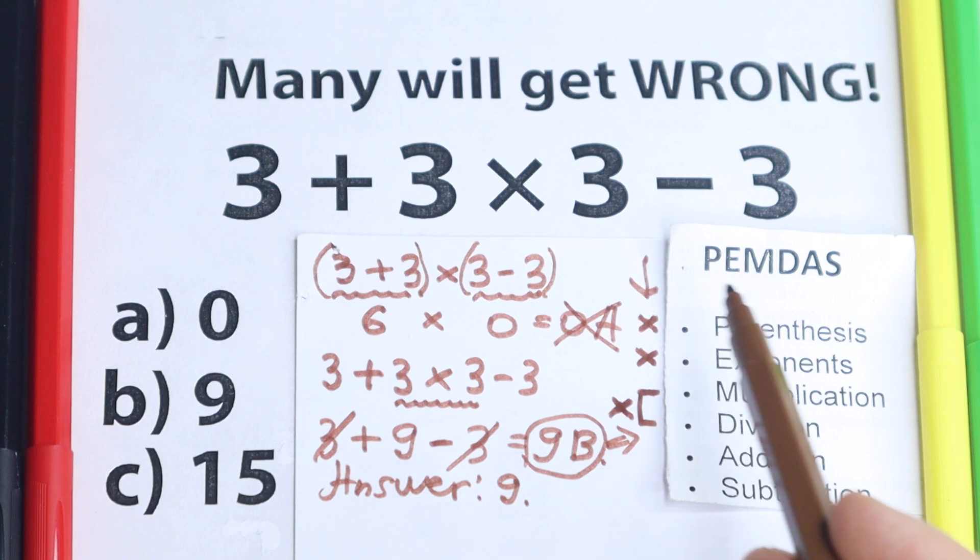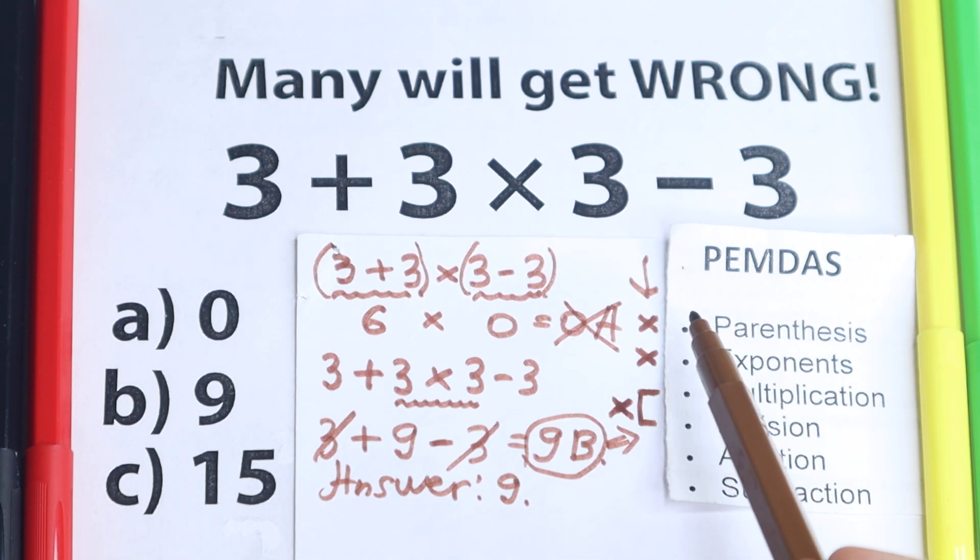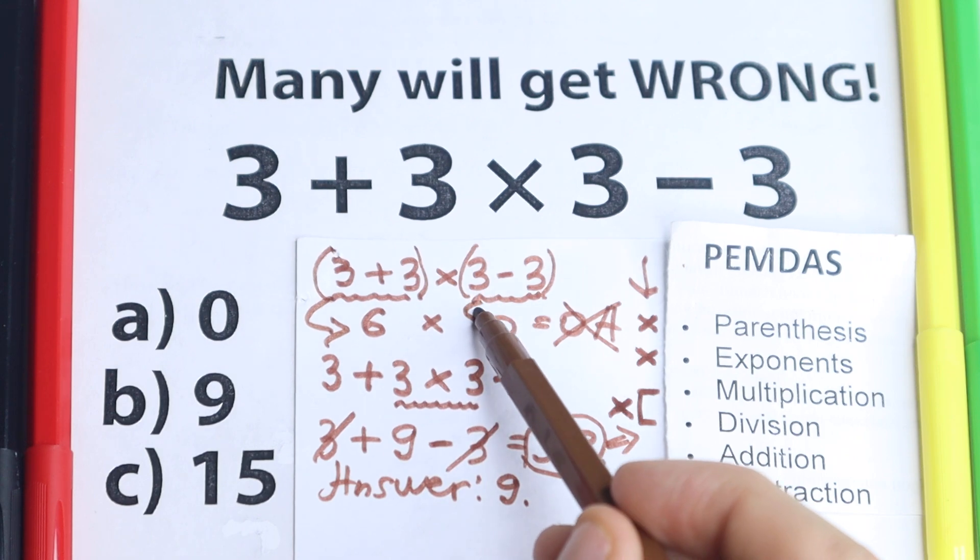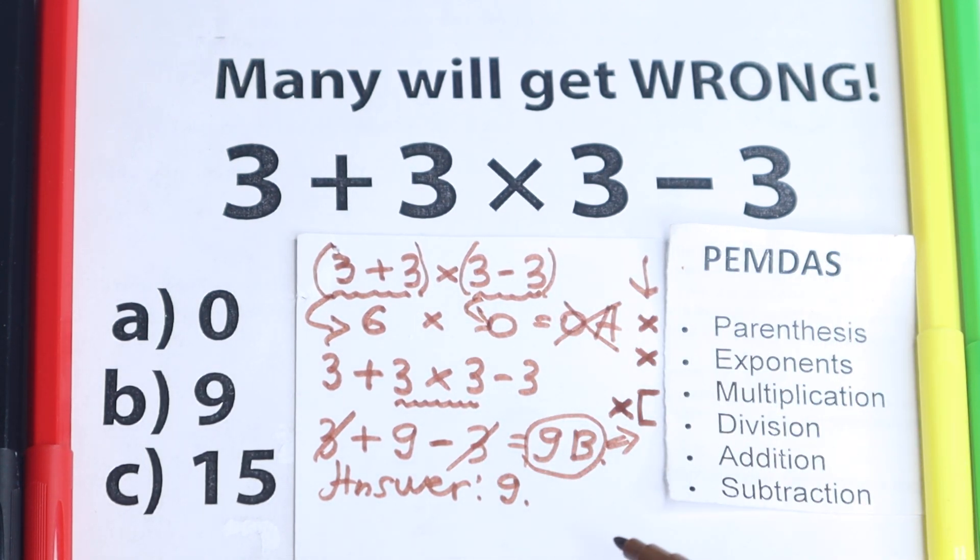If we put parentheses right here, then we need to start from it because this is our first step. So we have 3 plus 3 equal to 6 and 3 minus 3 equal to 0. But in our case we don't have parentheses. So according to PEMDAS, the correct answer is option B.